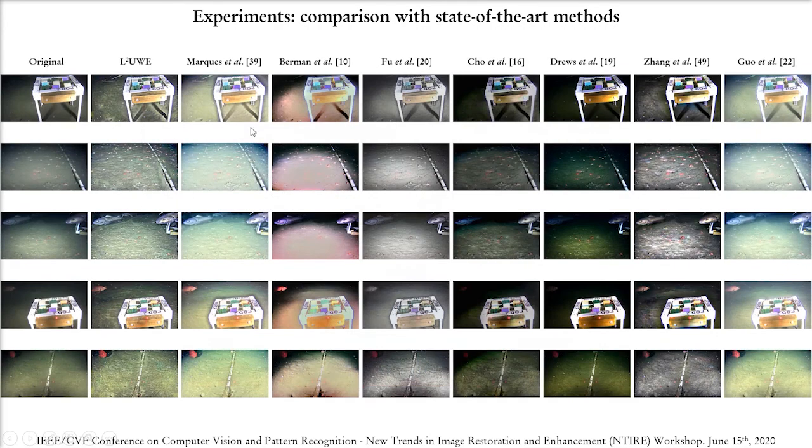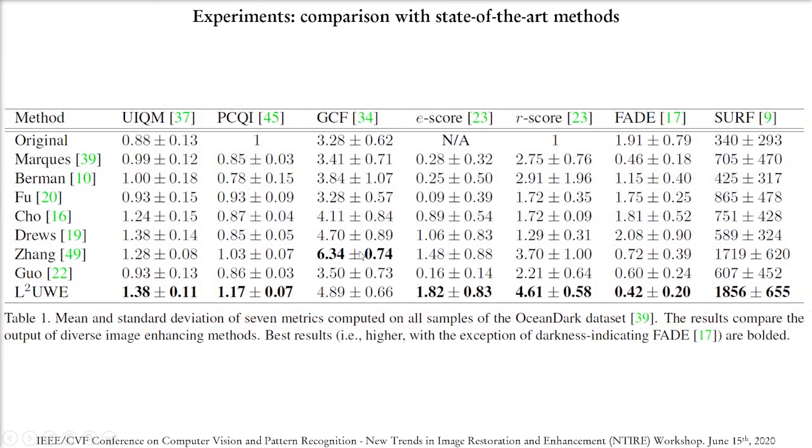In a qualitative analysis, we can see that LUI was able to efficiently remove darkness while keeping the finer details and contrast of the input images, while methods like ours from 2019 and GUOS were able to efficiently remove darkness but sometimes over-illuminated regions from the images. In a quantitative analysis, we calculate the mean and standard deviation from all the metrics considering all samples from OceanDark, and as you can see highlighted in bold, LUI was able to outperform all the methods in most of the metrics.